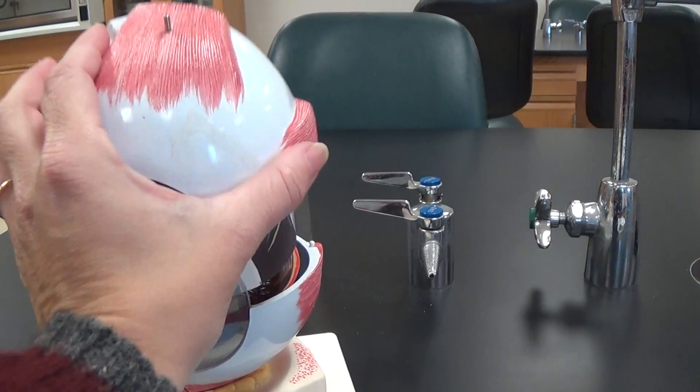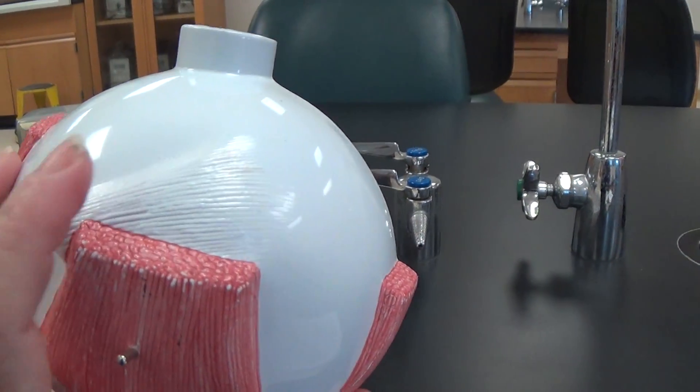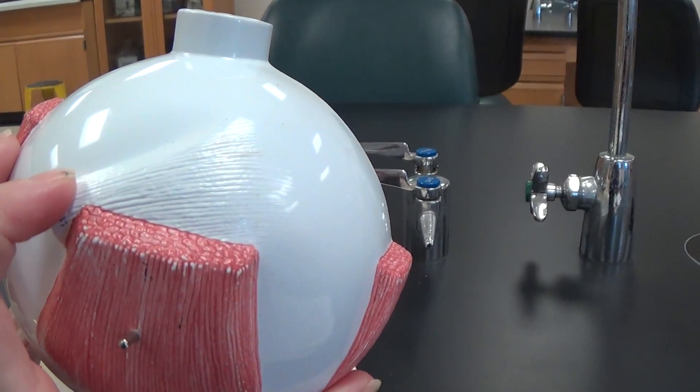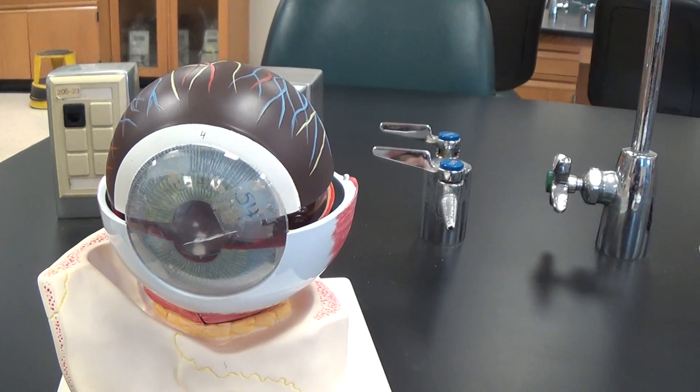When I pull this layer off, we can see a second muscle here that's oblique in nature. That is the superior oblique, and on the bottom side, we would have an inferior oblique as well.